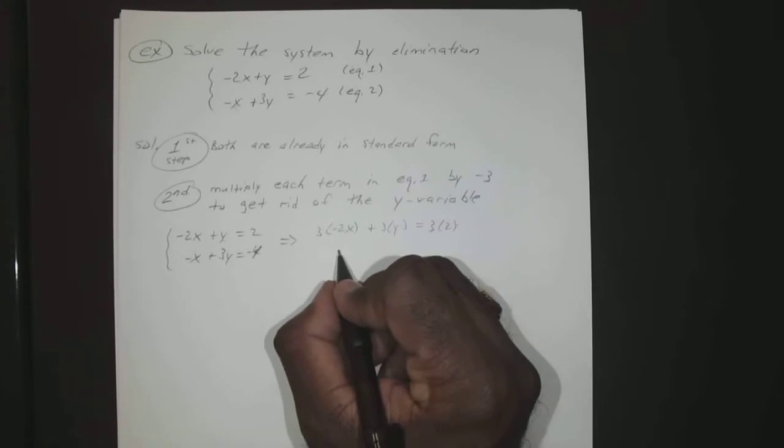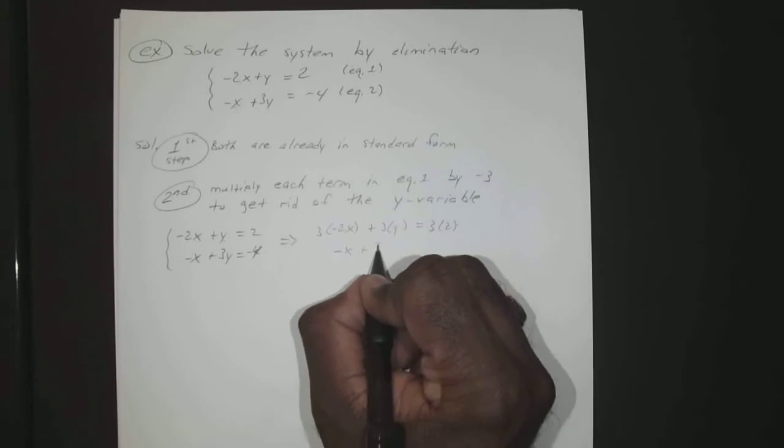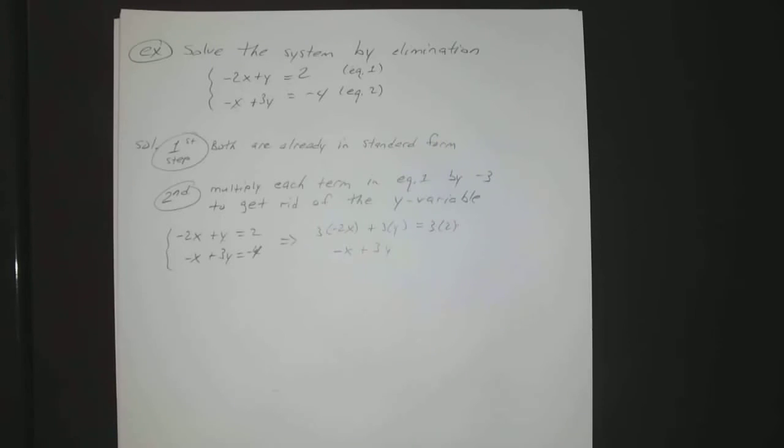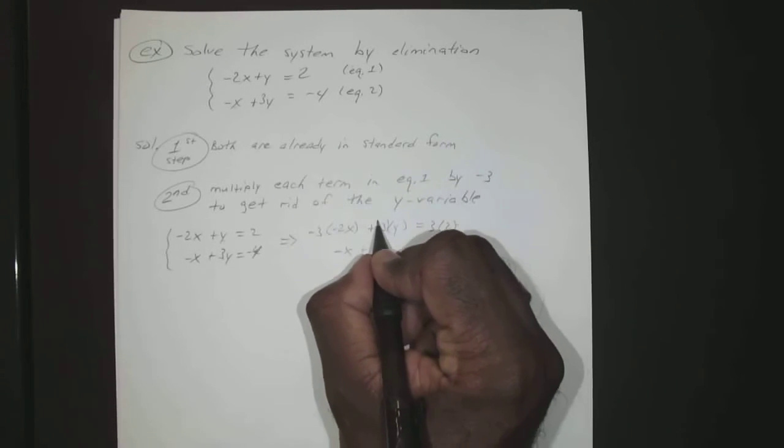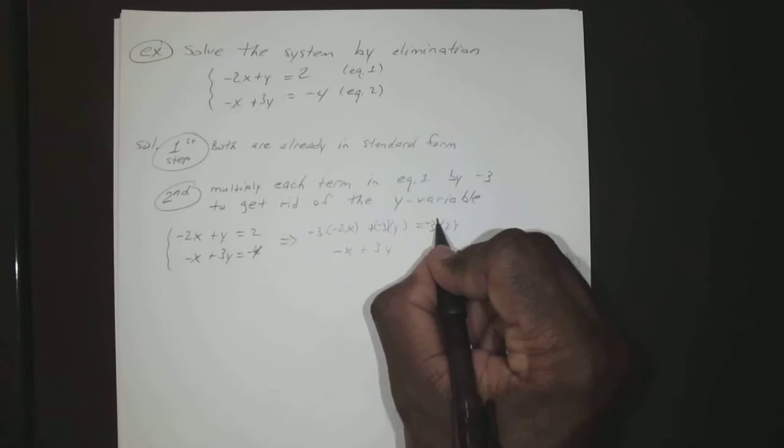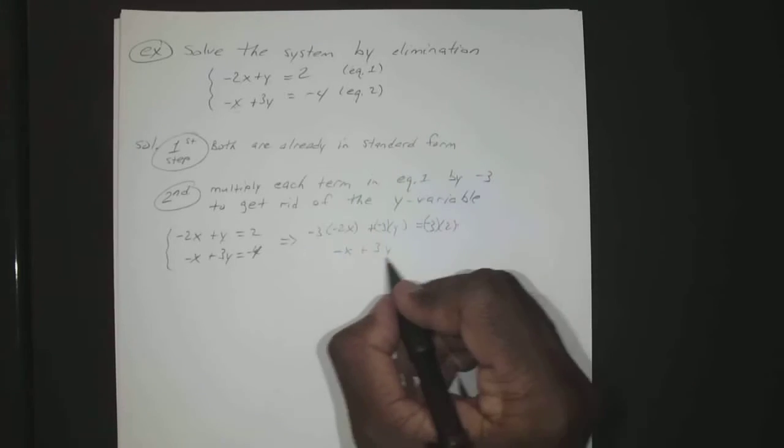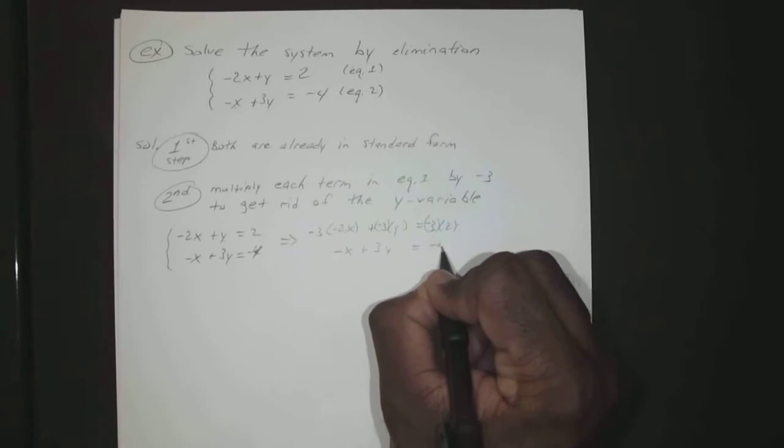And this one you keep it the same, -x + 3y... did I mess up somewhere? Oops, should have been -3, that's where I messed up. There we go, -x + 3y = -4.